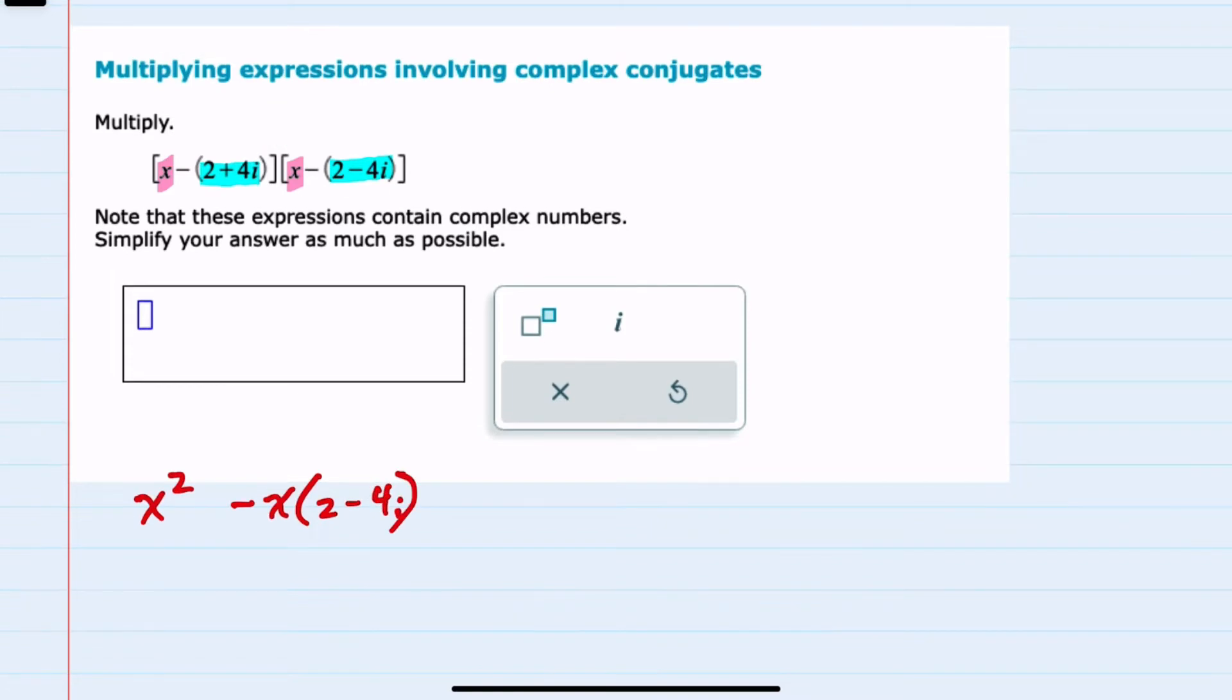And then we need to distribute that complex number. Again, notice that it's negative on the outside. I'm multiplying here by the x, so I will call that a negative x times the 2 plus 4i.